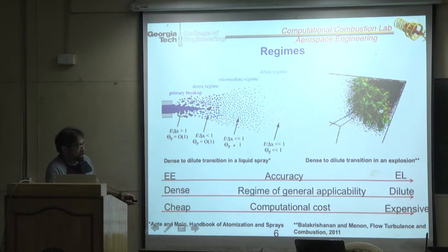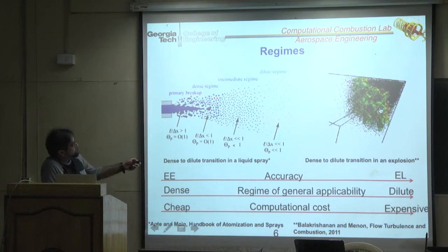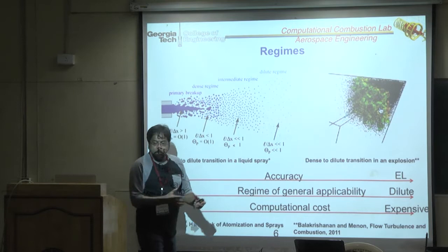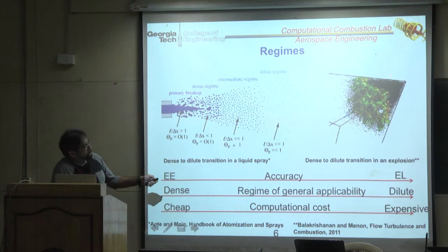A picture shows a detonation of a condensed-phase spherical charge sitting in open air containing solid aluminum particles. Initially when detonation occurs, the particles are concentrated near the shell of the blast wave — very dense — but as the blast wave propagates, the particles get pulled out and start becoming dilute.